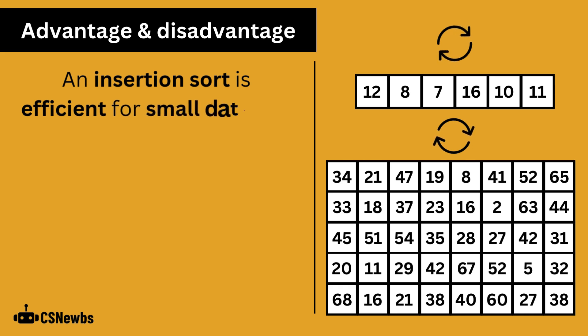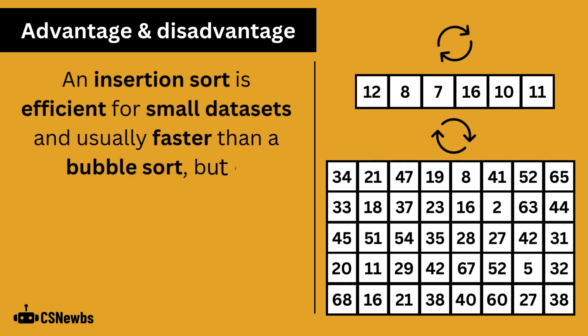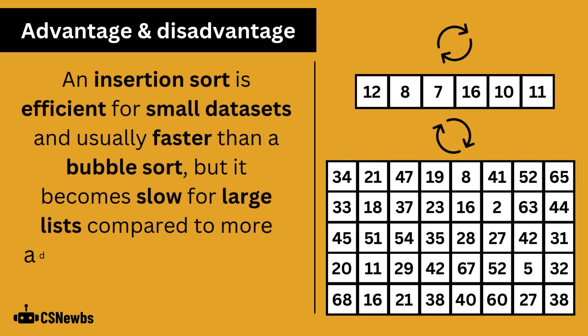An insertion sort is efficient for small data sets and usually faster than a bubble sort, but it becomes slow for large lists compared to more advanced algorithms like a merge sort.